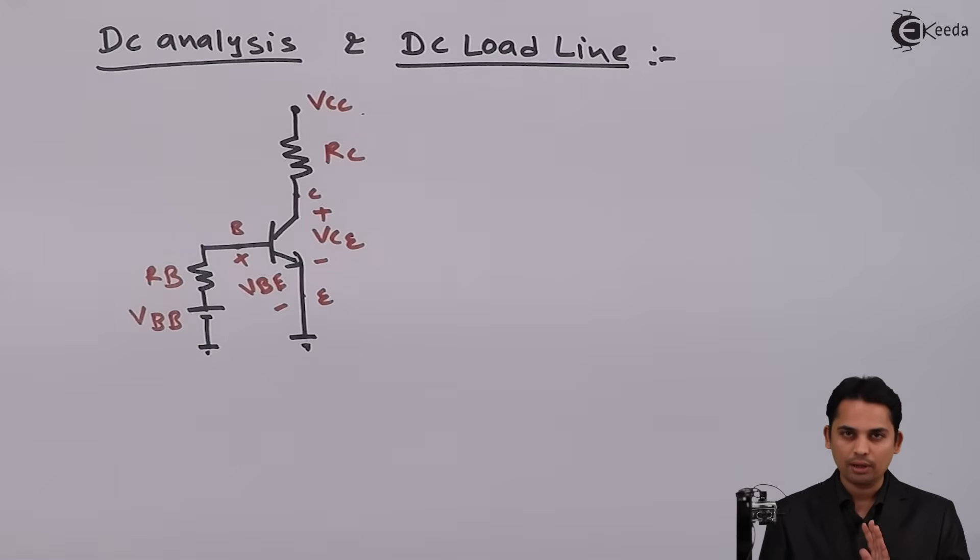I repeat, DC loadline is a graph which has all possible values of output current IC and output voltage VCE. So, apply KVL to the output, we will get...